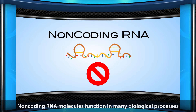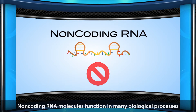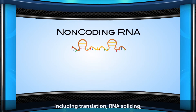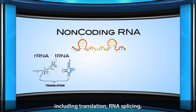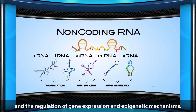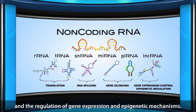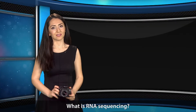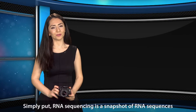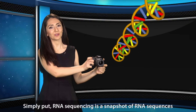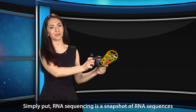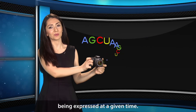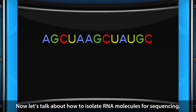Non-coding RNA molecules function in many biological processes, including translation, RNA splicing, and the regulation of gene expression and epigenetic mechanisms. What is RNA sequencing? Simply put, RNA sequencing is a snapshot of RNA sequences being expressed at a given time.